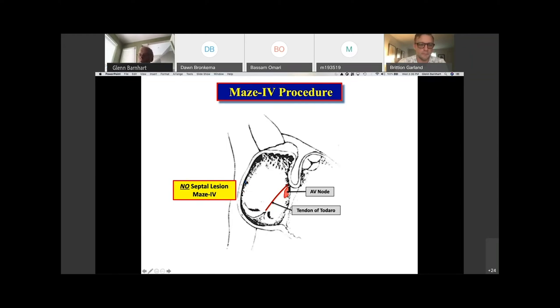And with the maze four procedure, it was taken out completely. So it really is impossible for the maze four procedure to have any heart block. Heart block occurs because of damage to the AV node or the His bundle. And you're nowhere near the AV node or His bundle on a maze four procedure.